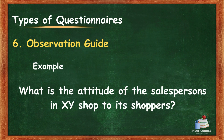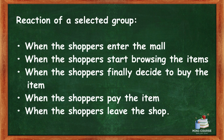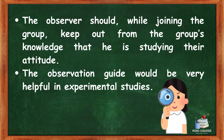Observation Guide example: 'What is the attitude of the salespersons in XY shop to its shoppers?' The observer records the reaction of a selected group: when shoppers enter the mall, when they start browsing items, when they decide to buy, when they pay, and when they leave the shop. The observer should, while joining the group, keep from the group's knowledge that he is studying their attitude. The Observation Guide would be very helpful in experimental studies.